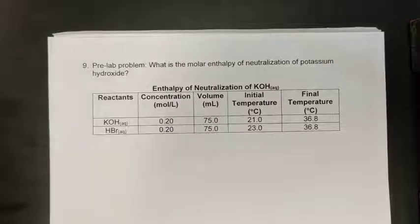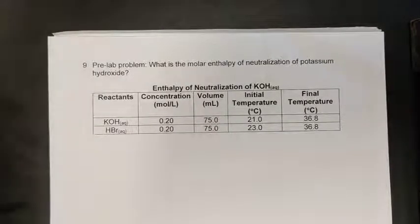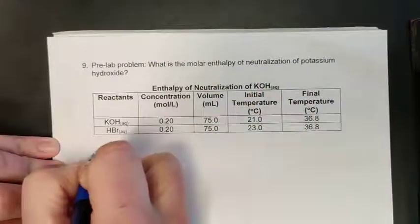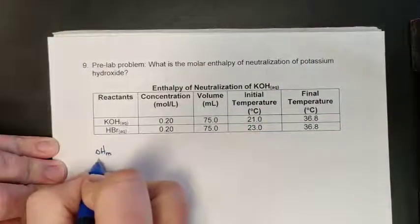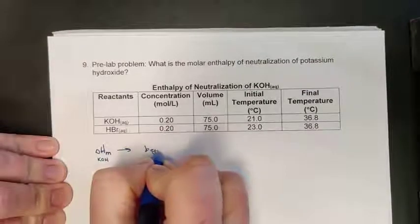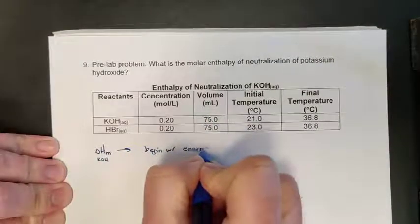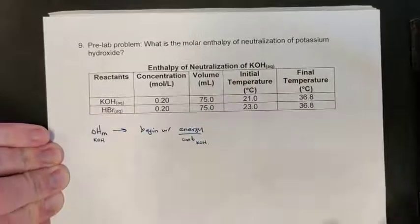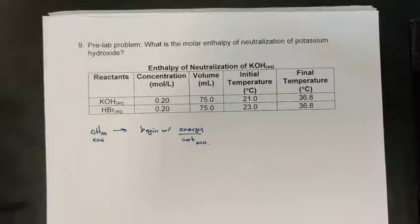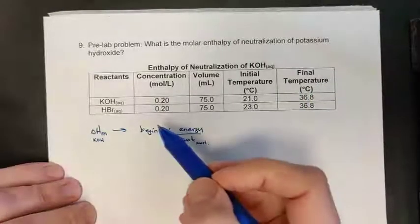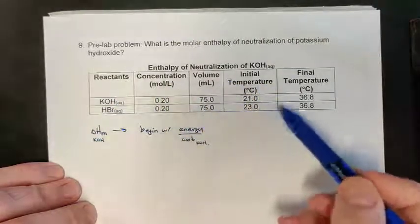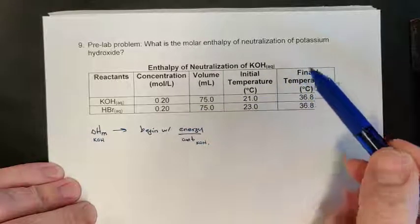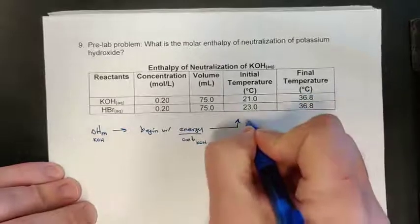Here's another example related to lab 11.2: what is the molar enthalpy of neutralization for potassium hydroxide? We're solving for delta H_m of KOH, so we begin with energy over amount. Looking at the table of data, I don't see direct energy information, but I do see volume of solution and temperature changes — this tells me the energy can be found from the calorimeter data.